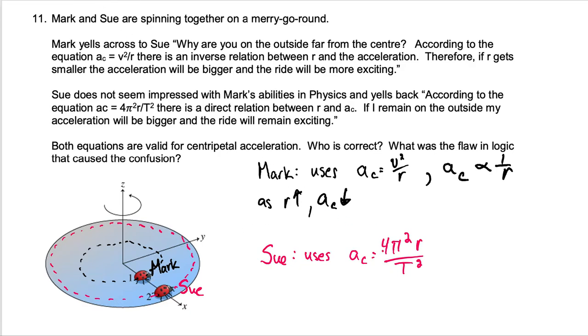Sue however uses the other equation 4π²r over t² and she states that according to this equation acceleration is directly related to r, the bigger r is the bigger the acceleration is. So she's saying as r goes up acceleration also goes up.